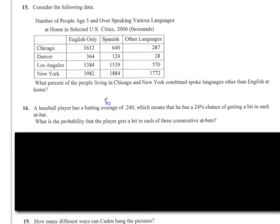They want to know in 15 what percent of the people living in Chicago and New York combined spoke languages other than English at home. Languages other than English would be Spanish and other languages in this.